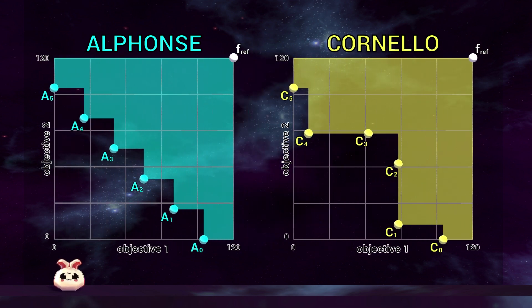The hypervolume indicator is quantified as a scalar value, where greater values indicate a better result. Now you can see the hypervolume indicator values calculated for each solution set, confirming that Cornello has the better performing solution set.